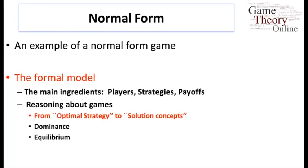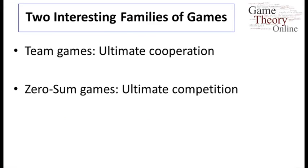We now know how to represent games. How do we analyze them? That leads into the notion of solution concepts and essentially much of game theory. We've seen that any matrix defines a game — more precisely, every matrix in which each cell has as many numbers as there are players, one payoff for each. In the case of two players, we sometimes call these bi-matrices, which you can view as two matrices, one for each player. That's a very large space of games. To get a sense for it, we can look at two specific classes: team games and zero-sum games. These capture the extreme points on the spectrum of cooperation and competition, respectively.